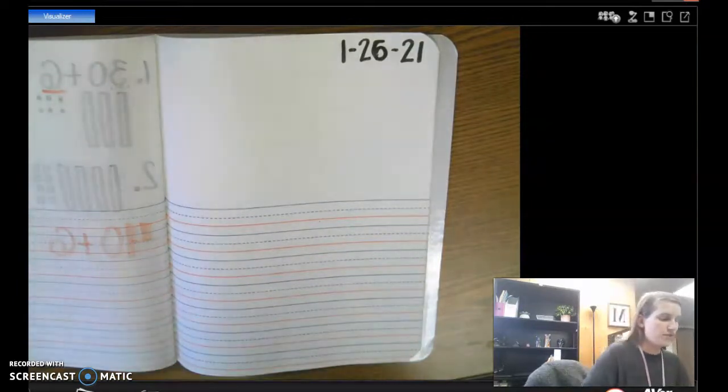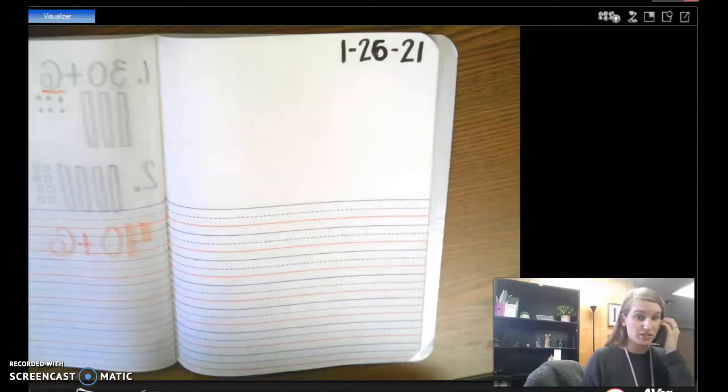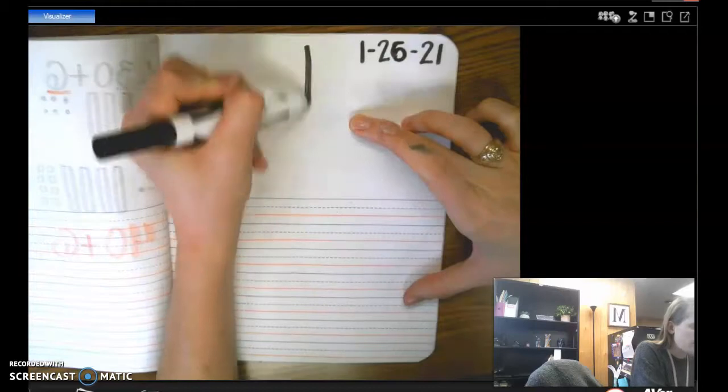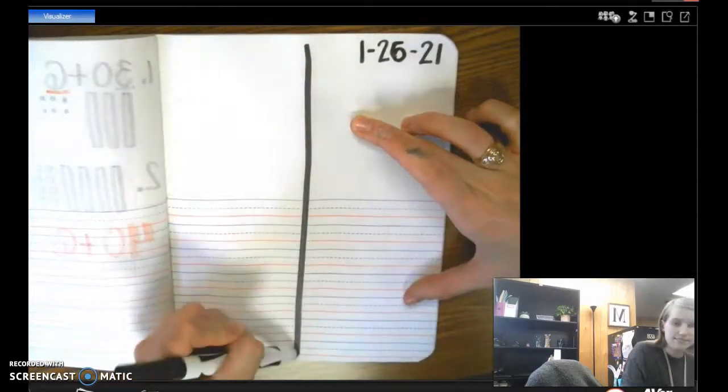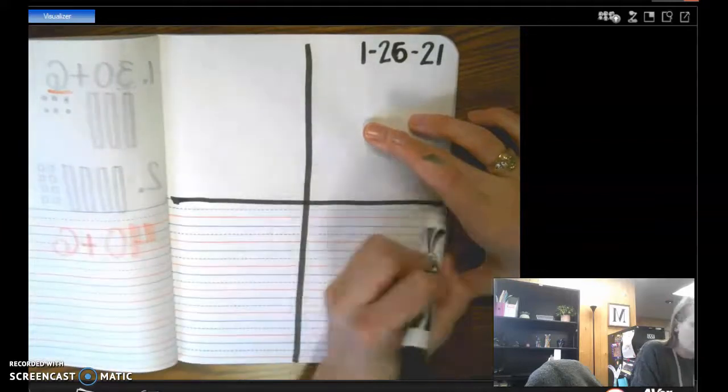Okay, so we are going to split up our paper into four sections. Because we're going to represent a number together. So all you need to do, you can draw a line down like this, and then a line across like this.